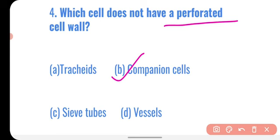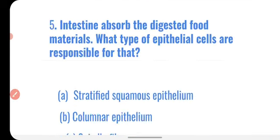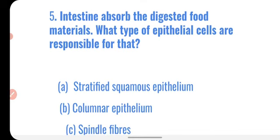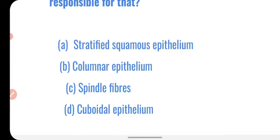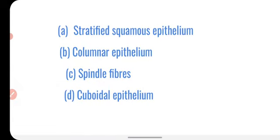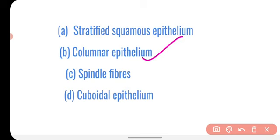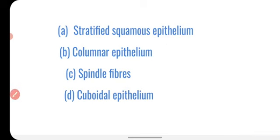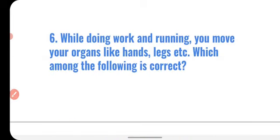Question number five: the intestine absorbs digested food material — what type of epithelial cells are responsible? Options are stratified squamous epithelium, columnar epithelium, spindle fiber, and cuboidal epithelium. The cells present in the small intestine are columnar epithelium cells, which absorb digested food into the blood.